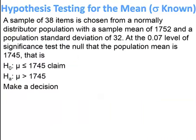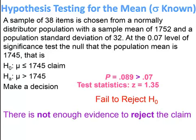Pause and try. The p-value is greater than alpha, so we fail to reject the null hypothesis. Because the claim is on the null hypothesis, there is not enough evidence to reject the claim.